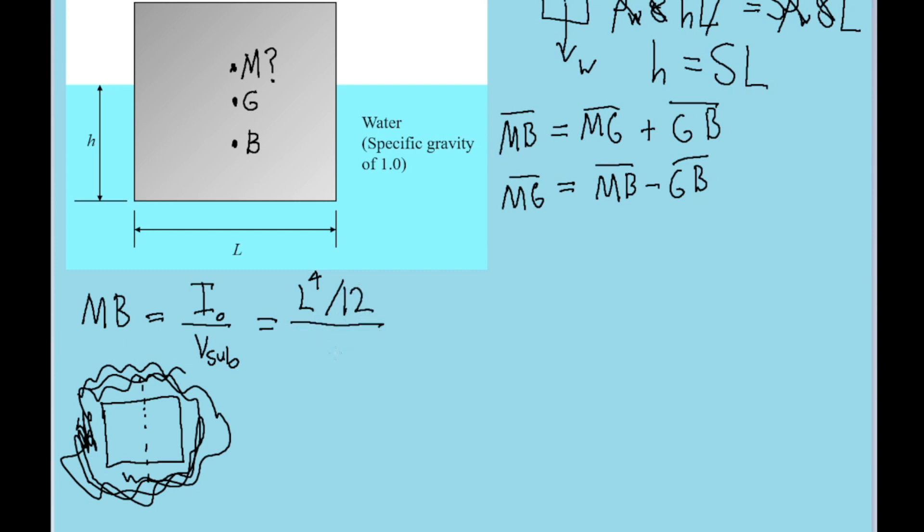And remember, this is all over the volume of the submerged portion, which is L squared times H. Let's clean this up by canceling out two of those L's, so we just have L squared at the top, and bring the 12 down to 12H at the bottom. I'm going to replace H with SL, since that was the formula we found earlier. Then one of these L's cancels out, so we just have L over 12S.